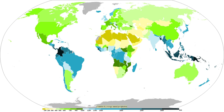Moisture that is lifted or otherwise forced to rise over a layer of sub-freezing air at the surface may be condensed into clouds and rain. This process is typically active when freezing rain occurs. A stationary front is often present near the area of freezing rain and serves as the foci for forcing and rising air. Given necessary and sufficient atmospheric moisture content, the moisture within the rising air will condense into clouds, namely stratus and cumulonimbus.